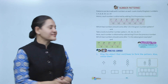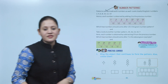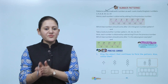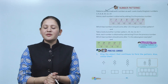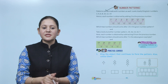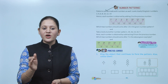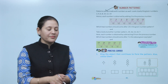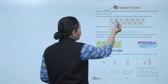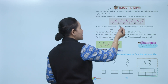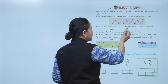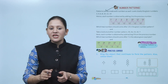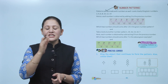Next is number patterns. We can make patterns with numbers as well. Look closely at the given numbers: 2, 4, 6, 8, 10, 12, 14. Each number is obtained by adding 2 to the previous number. If we add 2 to 2 we get 4, add 2 we get 6, add 2 we get 8, and so on — 10, 12, 14. Every time we add 2 to get the next number.